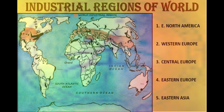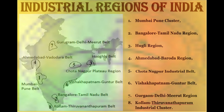In the description box I have provided the list of major areas and their related important industries. Now the major industrial regions of India are Mumbai-Pune cluster, Bangalore-Tamil Nadu region. Bangalore was renamed as Bengaluru on 1st November 2014, whereas Tamil Nadu was earlier Madras state, renamed in 1969. Then Hugli region, Ahmedabad-Vadodara region, Chota Nagpur industrial belt, Vishakhapatnam-Guntur belt, Gurgaon-Delhi-Meerut region, and Kollam-Thiruvananthapuram industrial cluster.